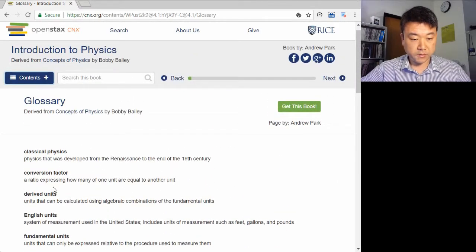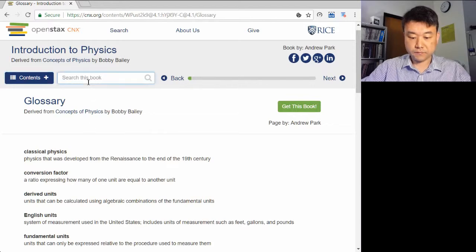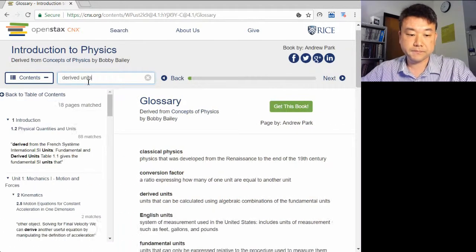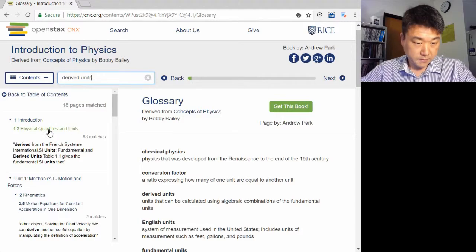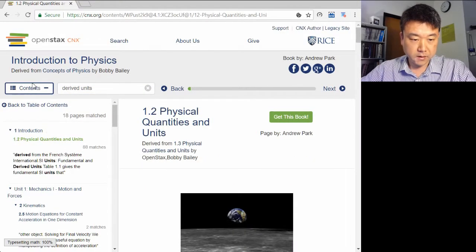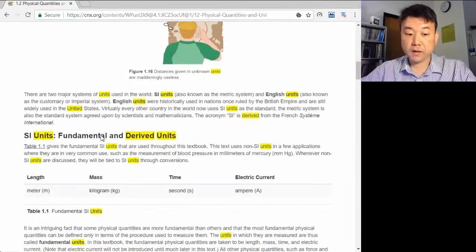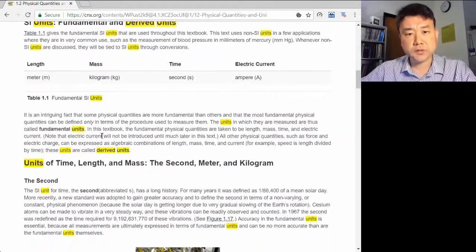For example, derived units. And you will find that in the context. And you can review anything you missed on your first reading that way.